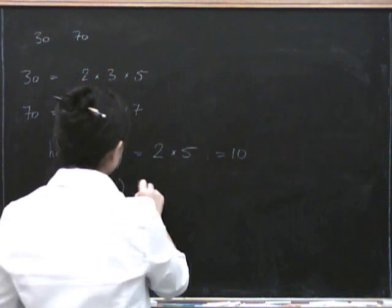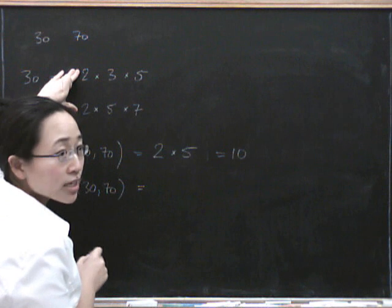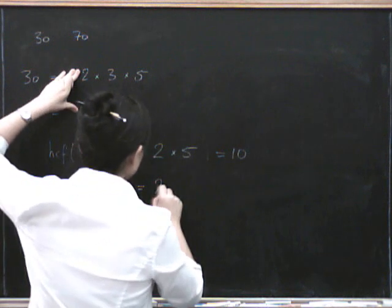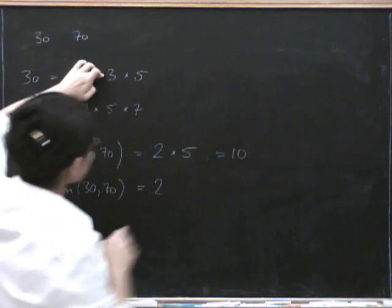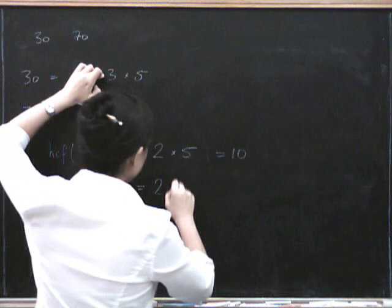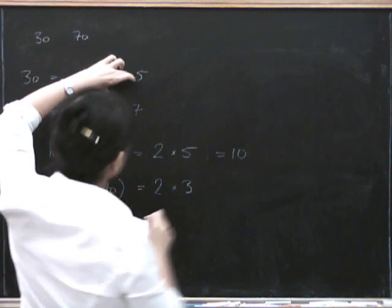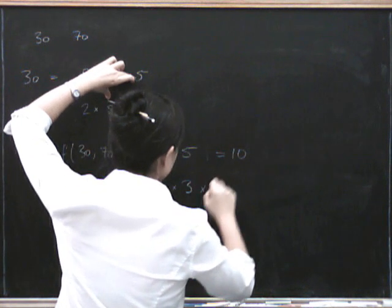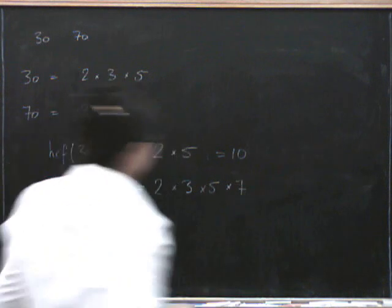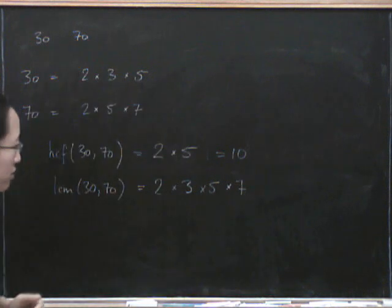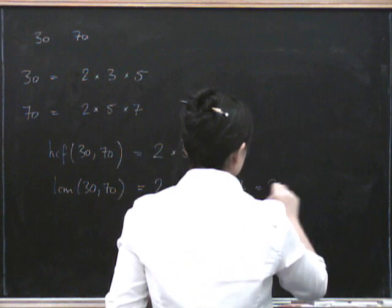So what we do is we say: we certainly need a 2, but we only need one 2 because that's the most that both of them have. We also need a 3, a 5, and a 7. So that's 3 times 7 equals 21, times 10 is 210.